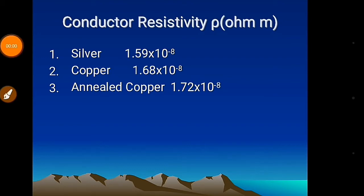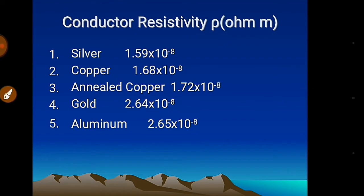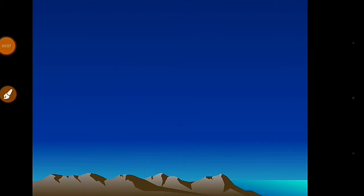Silver is the best conductor with resistivity of 1.59×10⁻⁸ Ω·m, but it is not used due to higher cost. Copper has resistivity of 1.68×10⁻⁸; after annealing it increases to 1.72×10⁻⁸. Gold has resistivity of 2.64×10⁻⁸ but is also not used due to cost. Aluminium has resistivity of 2.65×10⁻⁸. Copper and aluminium have all necessary manufacturing properties like ductility, electrical conductivity, malleability, and flexibility.